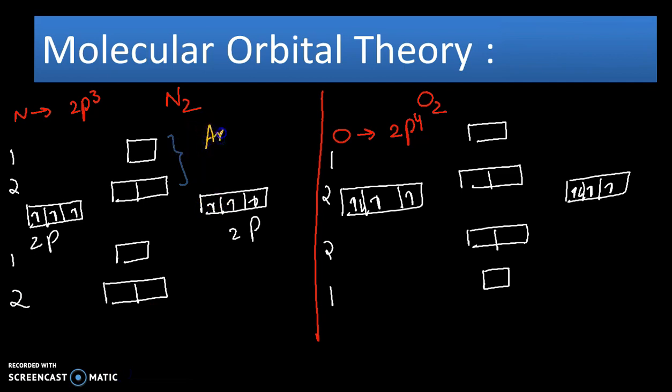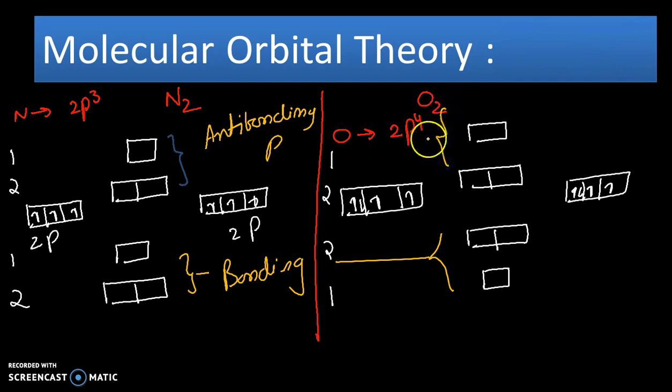These are anti-bonding p orbitals and the lower sets are bonding orbitals. The way of splitting is different in nitrogen and oxygen.